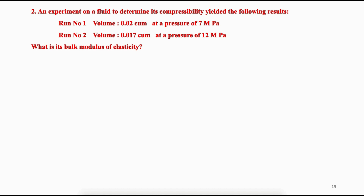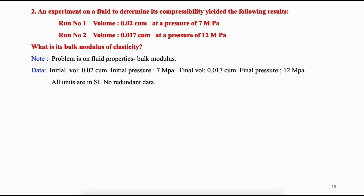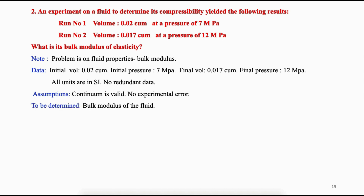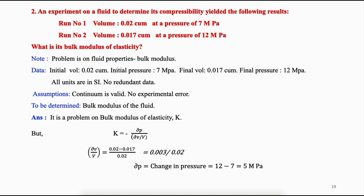Problem 2: An experiment to determine compressibility gave: Run 1 — volume 0.02 m³, pressure 7 MPa; Run 2 — volume 0.017 m³, pressure 12 MPa. Find the bulk modulus of elasticity. Given initial and final volumes and pressures, all units in SI. Using K = −∂P/(∂V/V) and substituting the values, the bulk modulus of the fluid is 33.33 MPa.